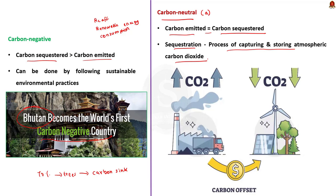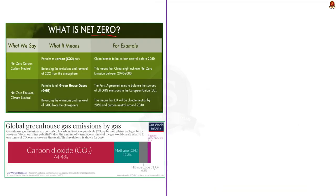Option B talks about the term net zero. Net zero is similar in principle to carbon neutrality but expanded in scale. To achieve net zero means to go beyond the removal of just carbon emissions — it refers to all greenhouse gases emitted into the atmosphere, such as methane, nitrous oxide and other hydrofluorocarbons. Note that the European Union has pledged to be carbon neutral by 2040, while aiming to be net zero by 2050.